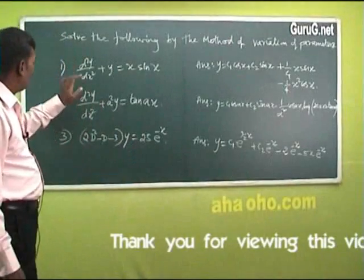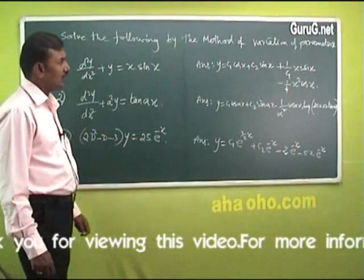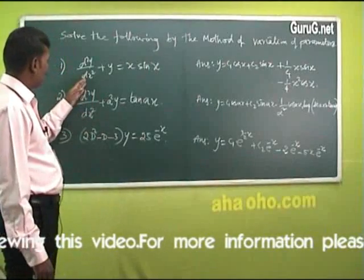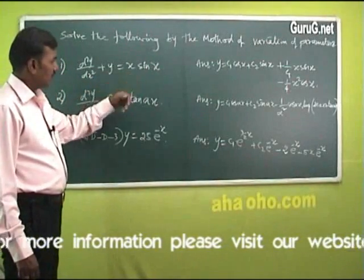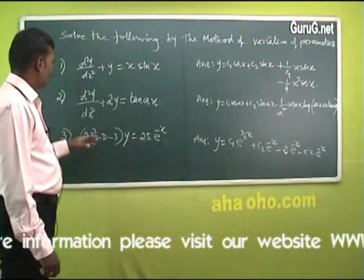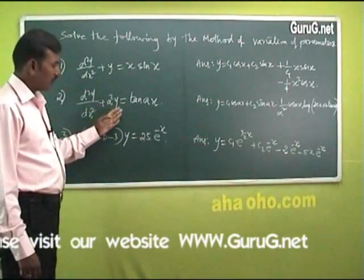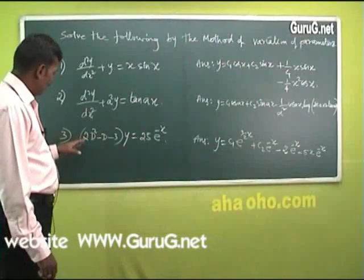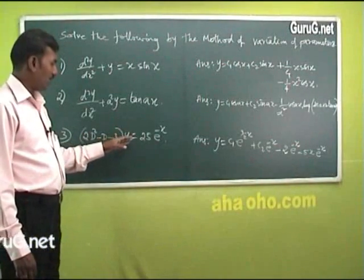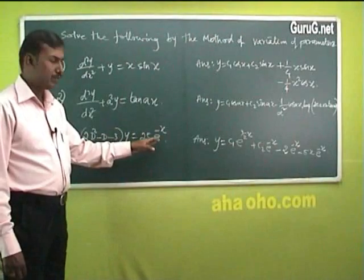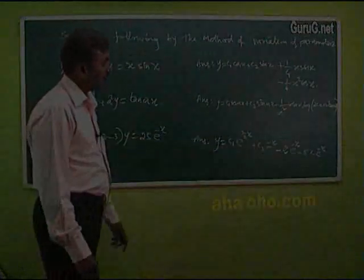Now try the following problems by the method of variation of parameters: (1) d²y/dx² + y = x·sin(x); (2) d²y/dx² + a²y = tan(ax); (3) (2D² − D − 3)y = 25·e^(−x). These are the corresponding problems whose answers you can verify.